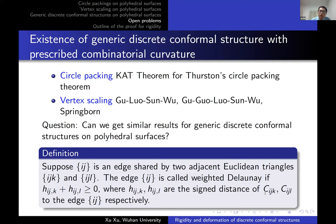A possible approach is to follow Gu-Luo-Sun-Wu and introduce the notion of a weighted Delaunay condition — replacing the standard Delaunay condition with a weighted Delaunay condition. We require that the signed distance between geometric centers c_ijk and c_ijl of two adjacent triangles ijk and ijl be non-negative. We believe this condition should be imposed to obtain the desired results.